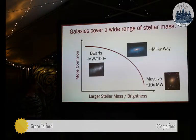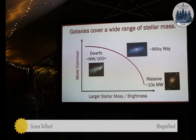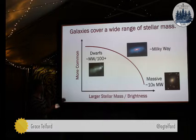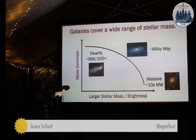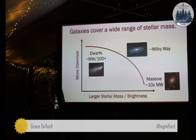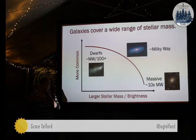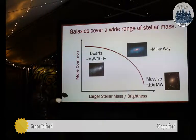Galaxies cover a huge range in stellar mass — they are not all basically the same size, by a long shot. We have our Milky Way-like typical galaxy. These galaxies are fairly common, and basically if you try to make a galaxy much bigger than that, they become a lot less common. It turns out it's really hard to make galaxies that are much bigger than our Milky Way. At the very, very massive end, you have galaxies that are something like 10 times more massive in terms of their stellar content.